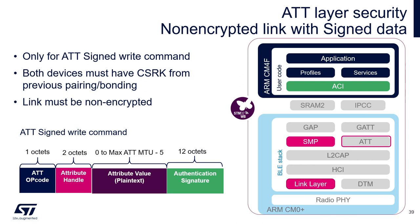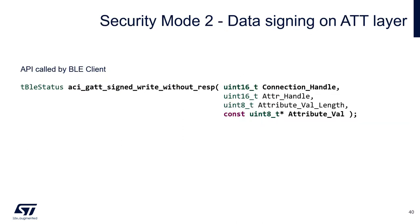On the right side you see the architecture of the BLE stack as implemented on the Cortex-M0+, and the attribute protocol level stands well above the link layer — this is where the signature is checked. Here you see the API used by the GATT client to perform a signed write without response.